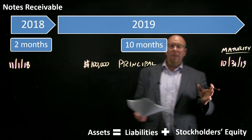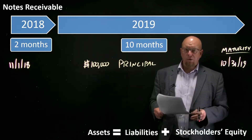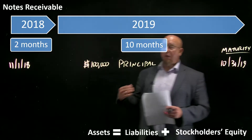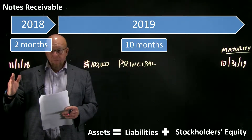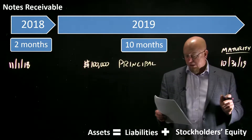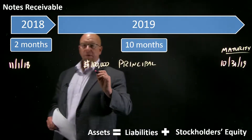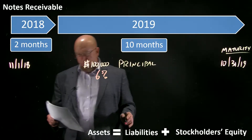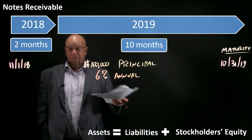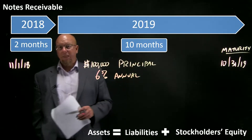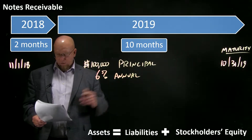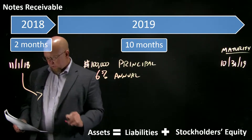Companies can get creative with how they structure loans. In this case, we loan $100,000 on November 1, 2018, and the borrower doesn't have to pay a dime until Halloween of the next year. The annual interest rate is 6% — and it's important to note that's annual. Six percent per month would be a 72% annual interest rate; we won't have any predatory lending practices like that.